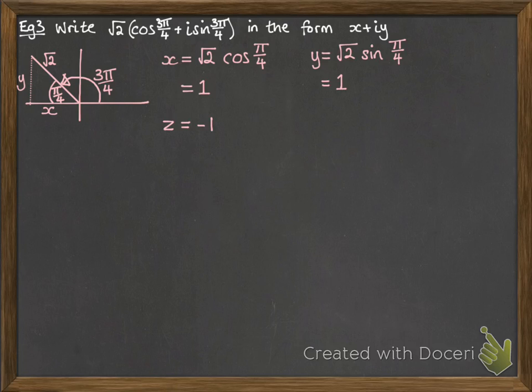So 1 away on the negative side would be minus 1. And then the 1 up on our imaginary scale will be an i. So our x plus iy form looks like minus 1 plus i. This form is sometimes called the Cartesian or rectangular form.